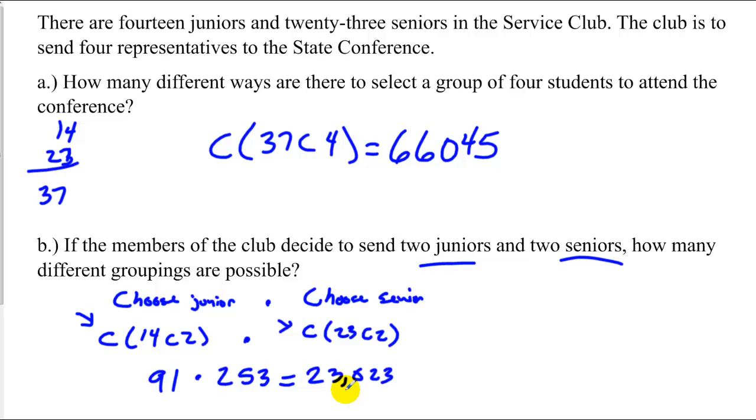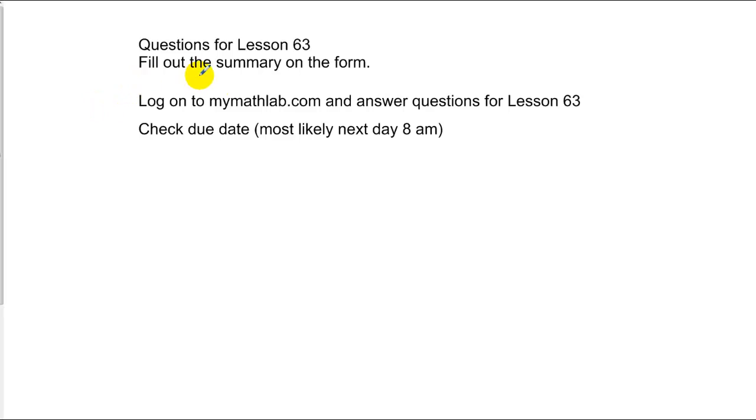So once again, to summarize, permutations is where we're arranging things and order matters. Combinations, I think you found out, a lot of times is a grouping where order doesn't matter. It's just a group. Fill out your lesson summary, do your MyMathLab. We'll talk more tomorrow.